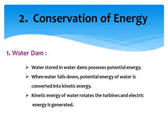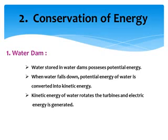The energy cannot be created or destroyed. It is converted from one form to another form. The potential energy is converted to kinetic energy. The kinetic energy of water rotates the turbines, and electrical energy is generated. So here we have three energies: potential energy, kinetic energy, and electrical energy — converted from one form to another.